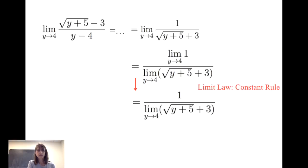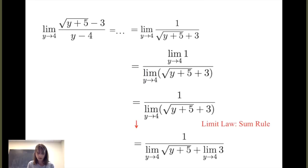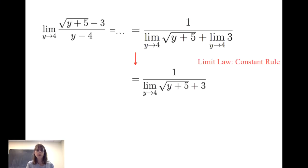The numerator has a constant, and in the denominator I have a limit of a sum, so I apply the sum rule. My original limit becomes one divided by the limit of the square root of y plus five as y gets close to four, plus the limit of three as y gets close to four. The limit of three is a constant, so I apply the constant rule, giving me one divided by the limit of the square root of y plus five plus three.